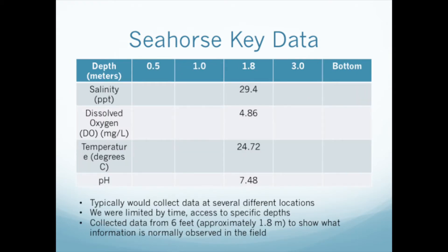This chart shows more of the conditional data collected the day the samples were taken, and also outlines the important information typically recorded when phytoplankton studies are conducted. This information was retrieved using a YSI meter. We only collected data from one depth because we were limited by time and access to multiple depths during our field trip to Seahorse Key. We left the rest of the table empty to demonstrate what would typically be done, showing that data from multiple locations and depths is needed to better understand ocean dynamics. The factors we obtained using the YSI were salinity, dissolved oxygen, temperature, and pH of the water.